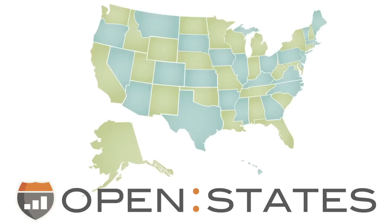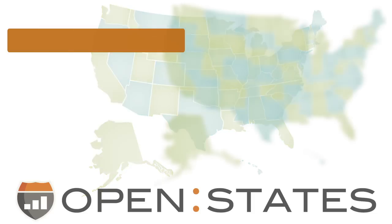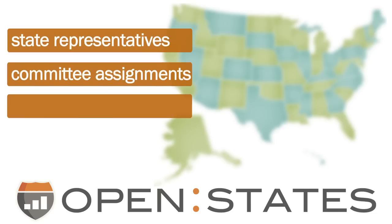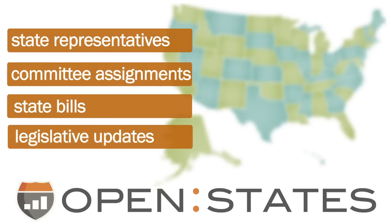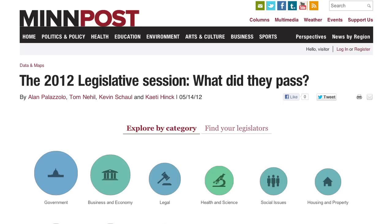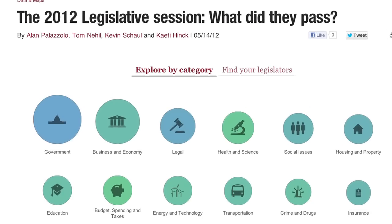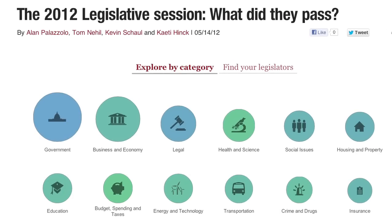Beyond Washington, we've compiled legislative information from all 50 states as part of our Open States project. The Open States API is the first free, comprehensive source of state government data. It includes information about state representatives, their committee assignments, the bills they're introducing, and what's happening with that legislation. The Minnesota Post used this API to build an interactive graphic reflecting what Minnesota elected officials did in session.